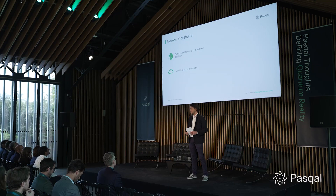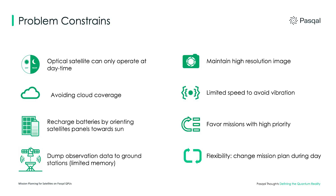The first constraint is that satellites are equipped with optical instruments, so they cannot take pictures at night and can only take pictures when flying over regions with no clouds. The second is that images must be ultra-high resolution, meaning the observation instruments need to move slowly enough from one position to another. Client requests also have different priorities, so it's important to favor missions with higher priority. Finally, the plan must be flexible — we need to be able to adapt to new requests during the day and be fast enough to do so.